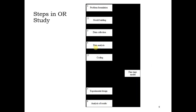The steps involved in operations research are: first, problem formulation or data formulation; then, constructing a mathematical model; next, collecting and analyzing the data, implementing code, and fine-tuning any errors or bogus data; and finally, performing experiments and analyzing the results.